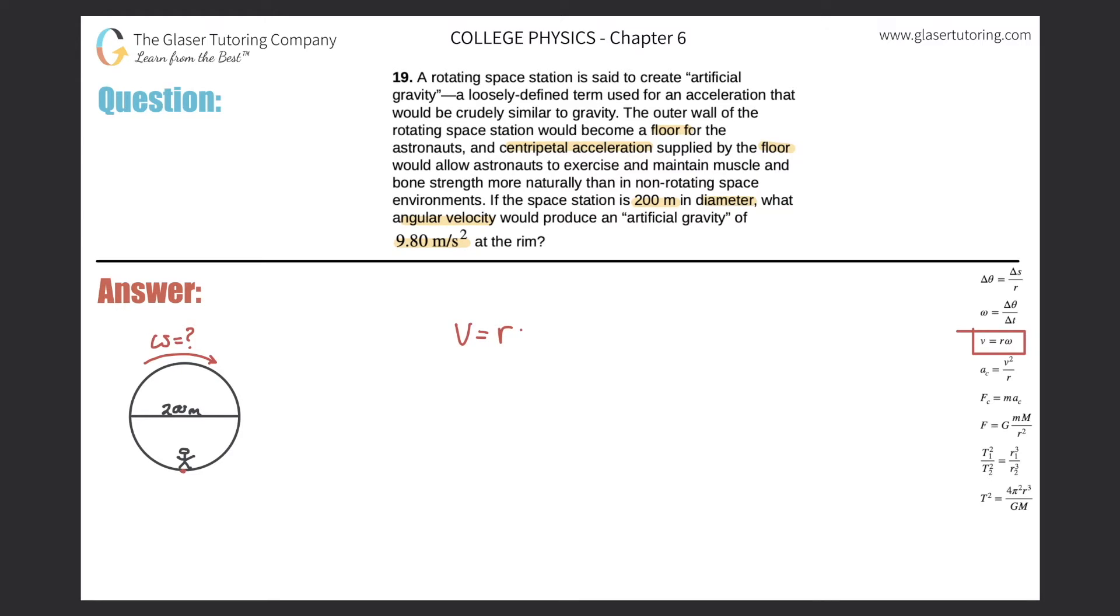The linear velocity is equal to the radius multiplied by the angular velocity. I want to solve for the angular velocity, so let me just do so right now. Just divide both sides by r. What that gives you now is the angular velocity is equal to the tangential or linear velocity divided by the radius.